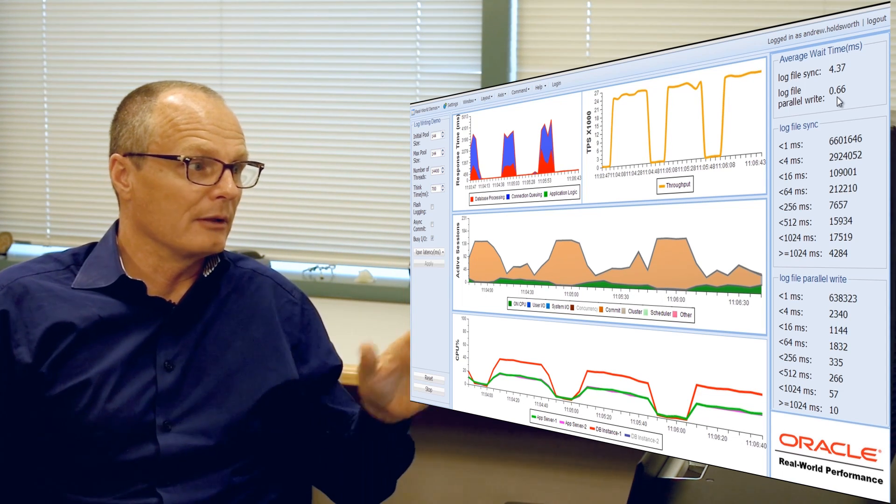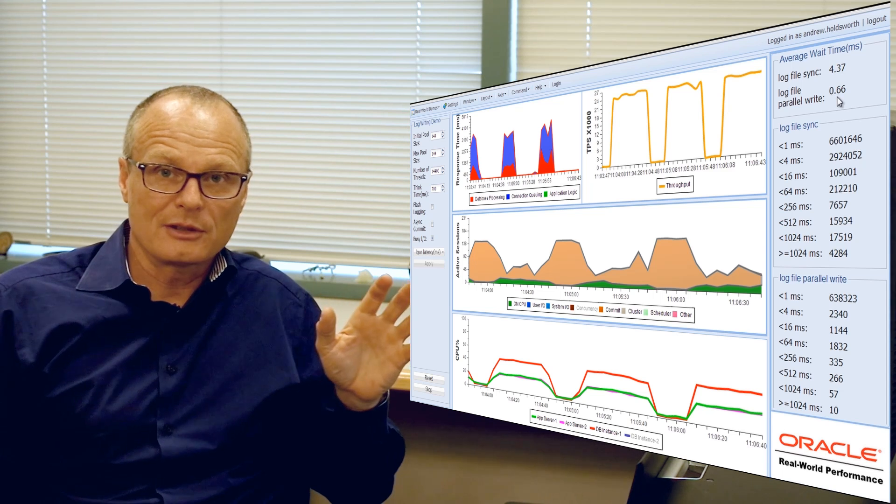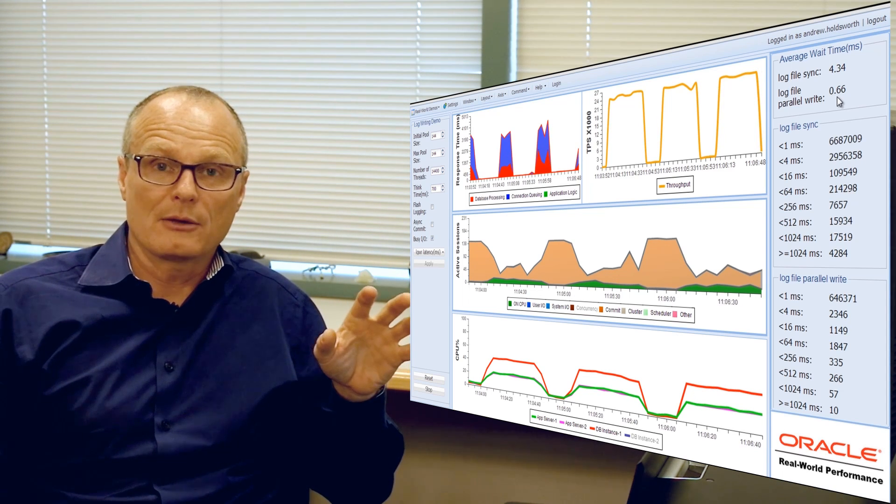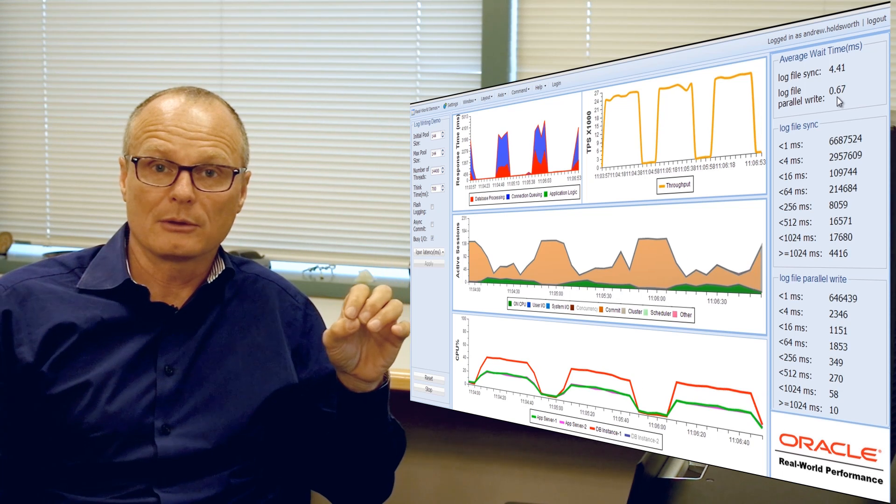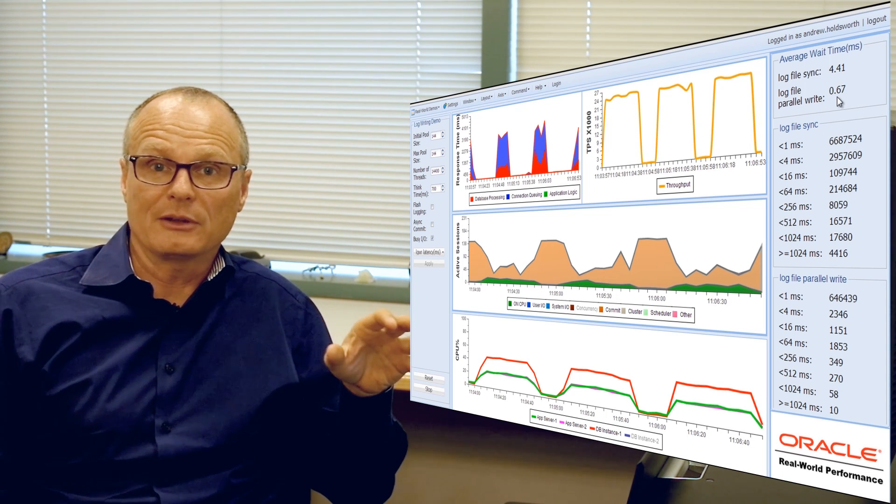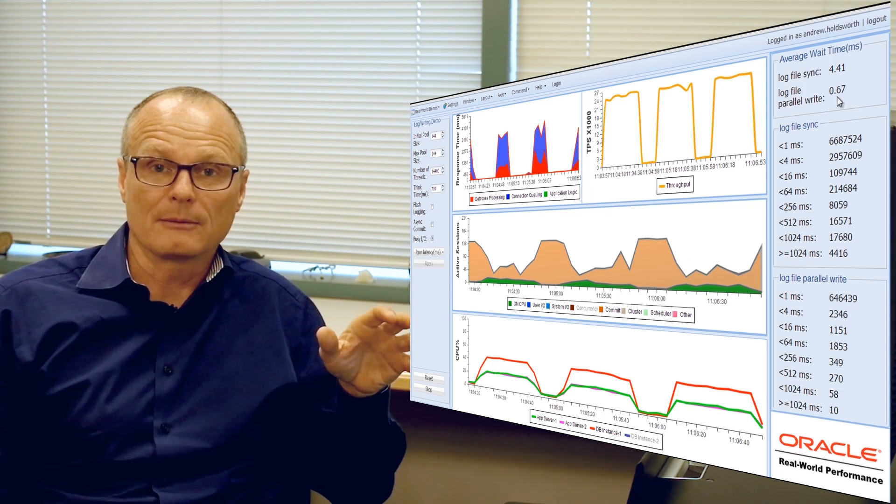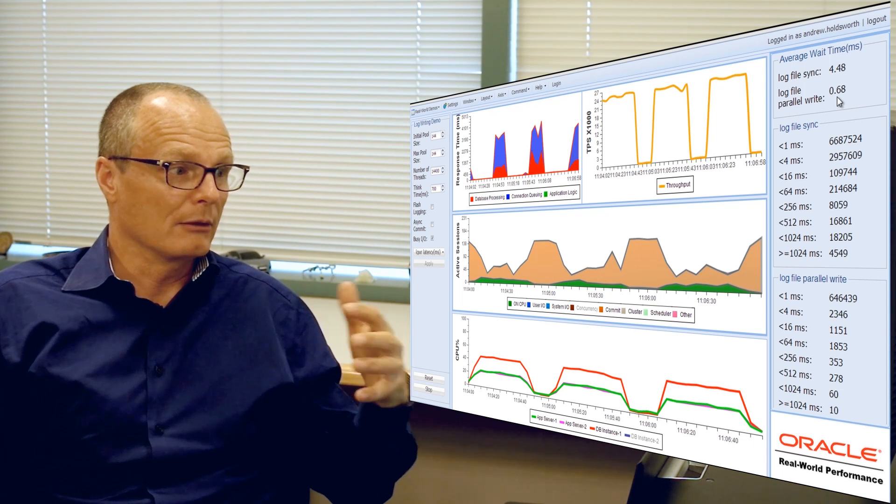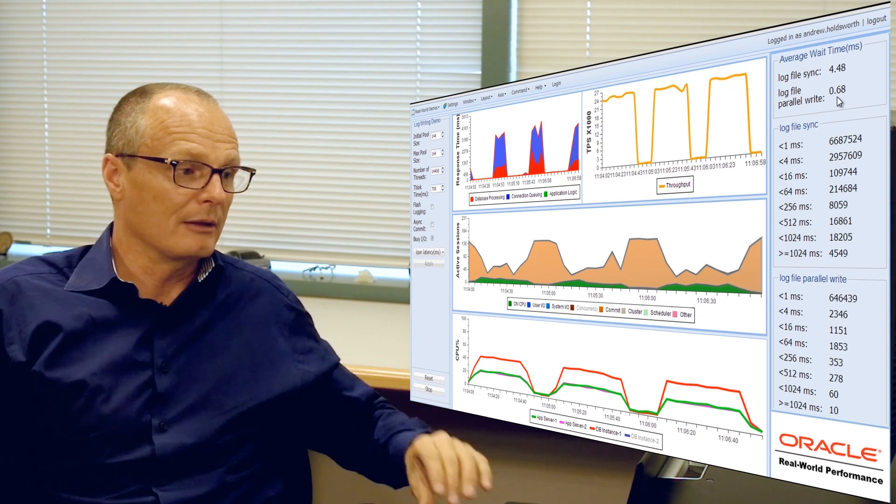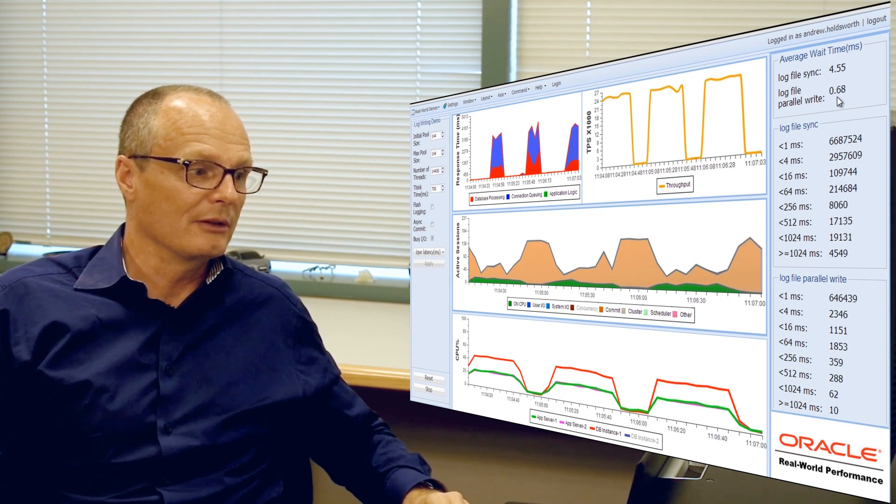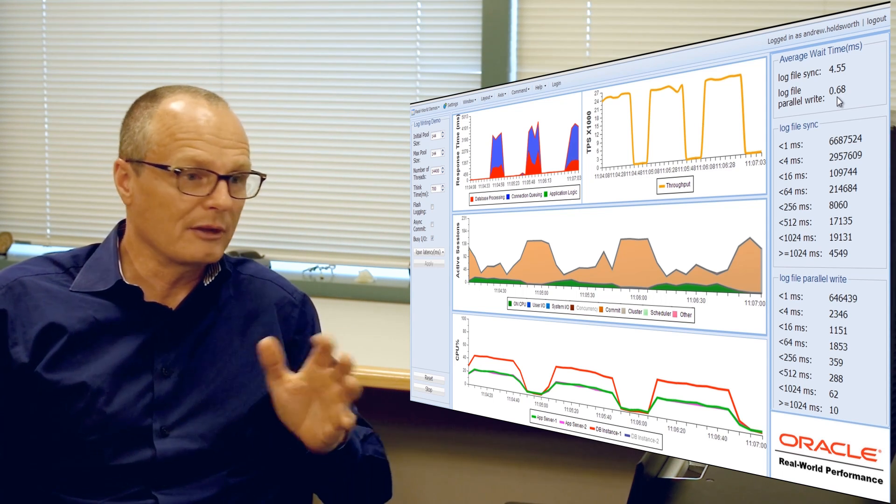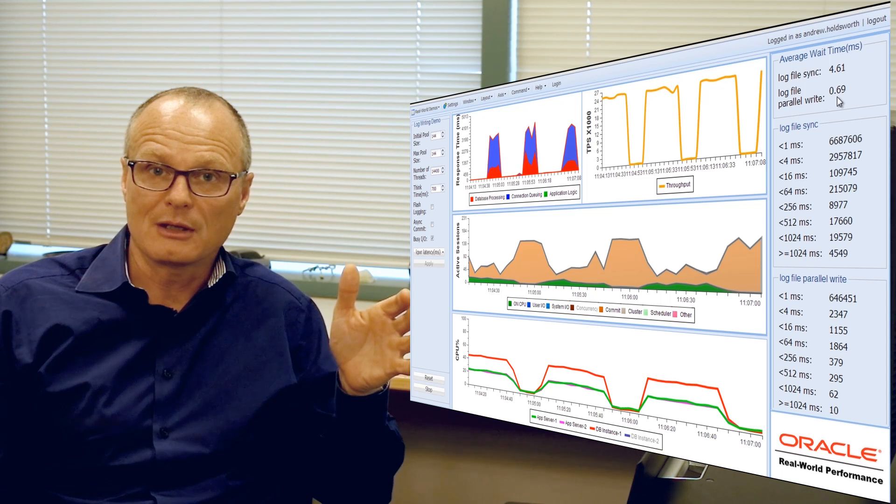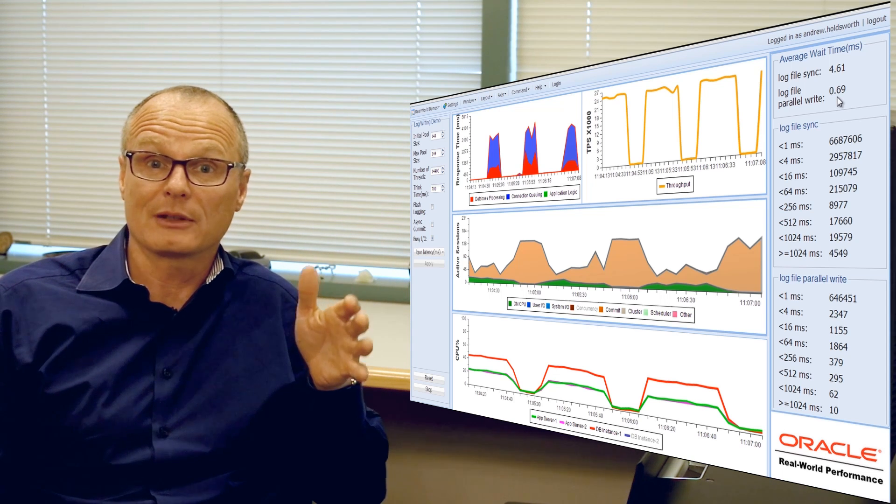In this workload that we've got here, we've artificially made the log writer slow by having another database continually checkpoint and do a lot of IO to the same disks that we write redo to. As a result, the log writes are getting slower and slower. In fact, some of the log writes, as you can see we've got ten of them over a second. So whilst I've been running ten of the seconds, the database has been effectively stalled.